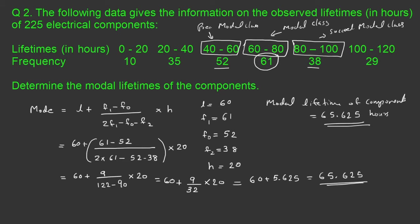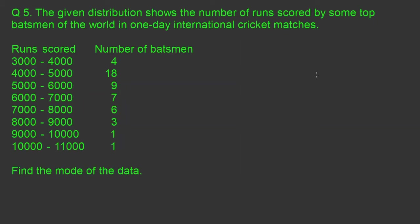Let us move to question number 5 in the exercise. The given distribution shows the number of runs scored by some top batsmen of the world in one-day international cricket matches. Find the mode of the data. In a similar way, I have to find the modal class, which is the class with the maximum frequency. The maximum frequency here is 18, so the modal class is 4000 to 5000.